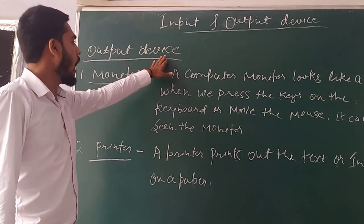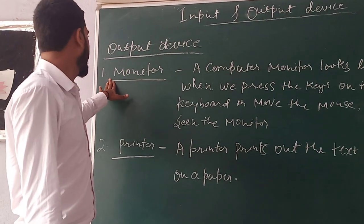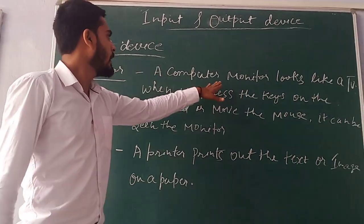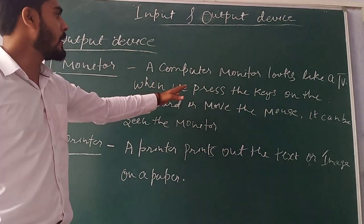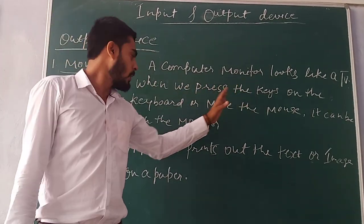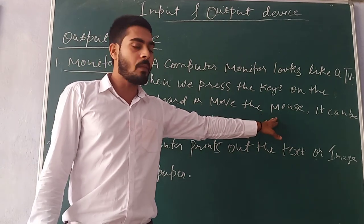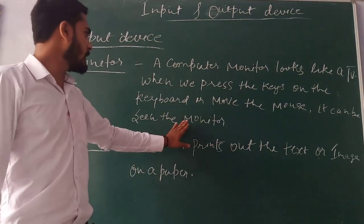Output device. For example, first, monitor. What is monitor? A computer monitor looks like a TV. When you press the keys on the keyboard or move the mouse, it can be seen on the monitor.